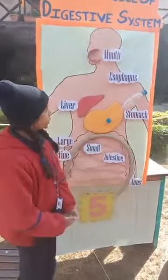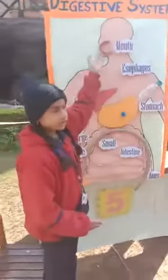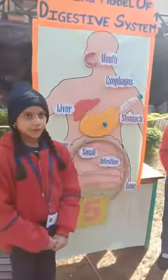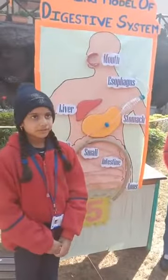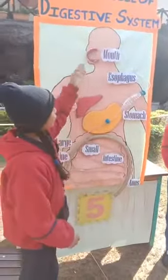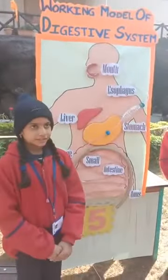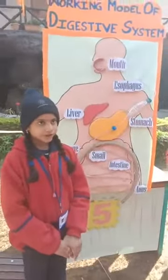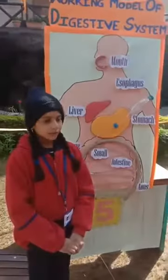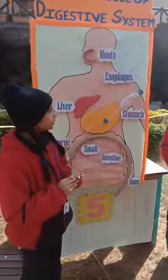First, the process of digestion begins in the mouth. The food is chewed and properly mixed with saliva with the help of the tongue and teeth. The saliva contains digestive juices which break down some parts of food into simple substances.